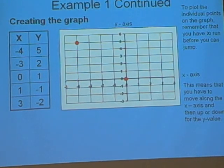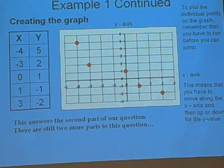Next point. (0,1) for the X, it doesn't go left or right at all, it goes up 1. (1,-1) for the X means it goes to the right 1, and then down 1 for the -1 in the Y. Next one. The last one is (3,-2). So we go to the right 3, -2 means we go down 2. And that's our points there. This answers the second part of the question. There are still two more parts to this question.